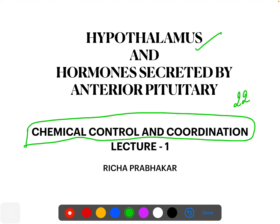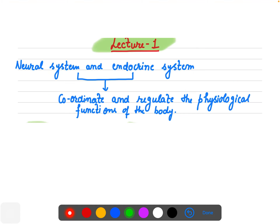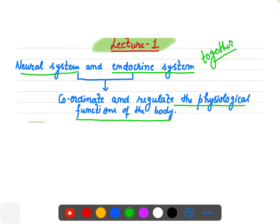The first topic today is about the hypothalamus, and we will also discuss a few hormones secreted by the pituitary gland. Just recently we finished with the neural system. The neural system and endocrine system together coordinate and regulate many physiological — internal — functions of the body.